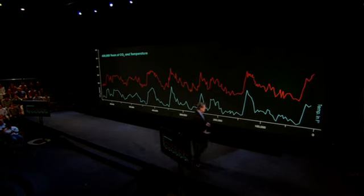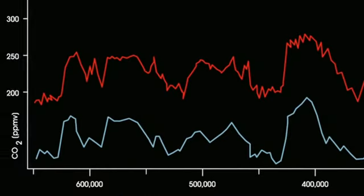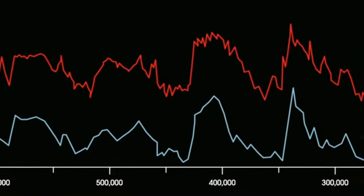And the relationship is actually very complicated, but there is one relationship that is far more powerful than all the others, and it is this: when there is more carbon dioxide, the temperature gets warmer because it traps more heat from the sun inside.